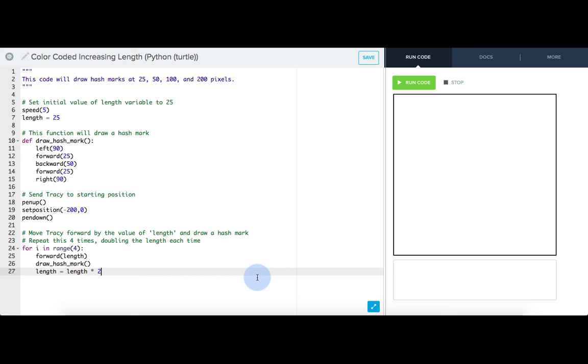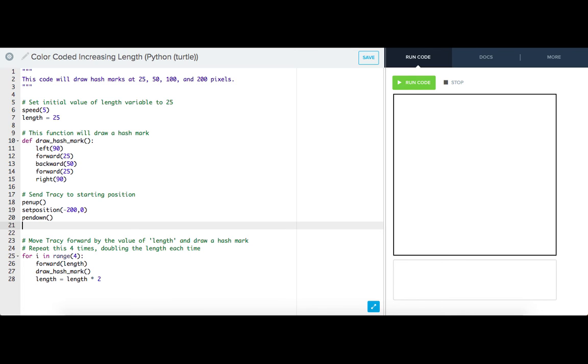Let's first tackle the pen size. After Tracy gets to the starting position, I'll add in a call for user input. I'll save their input as a variable named mark_thickness.